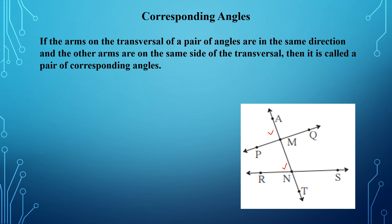Similarly students, you can get more pairs of corresponding angles. If you see angle AMQ and angle MNS — one arm on the transversal is in the same direction and the other arms are on the same side of the transversal. So this is the second pair of corresponding angles. In such manner, we can have four pairs of corresponding angles.